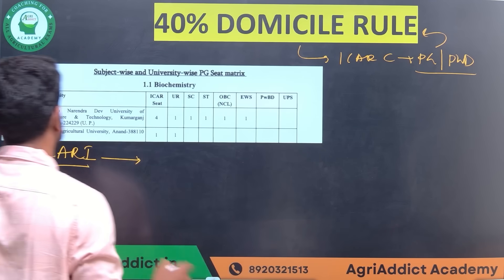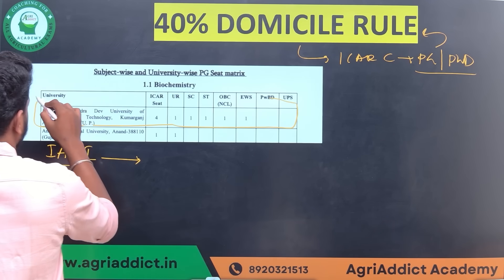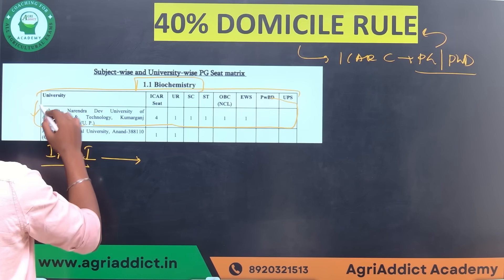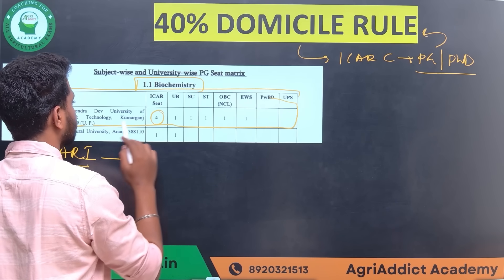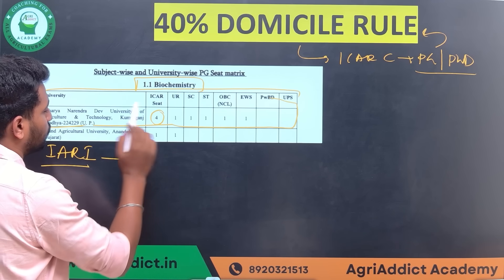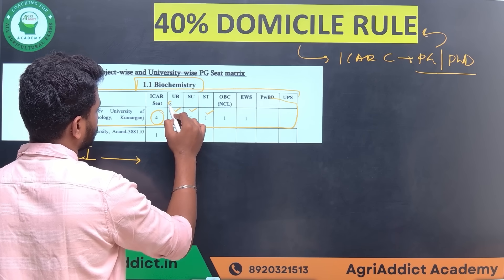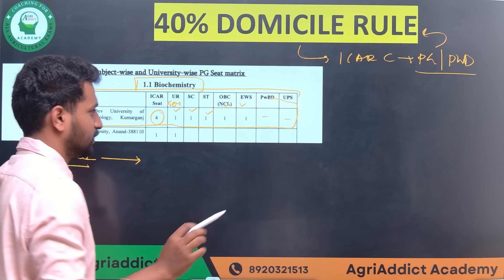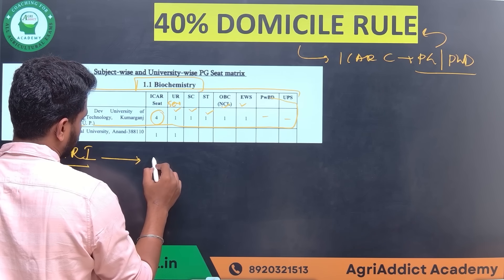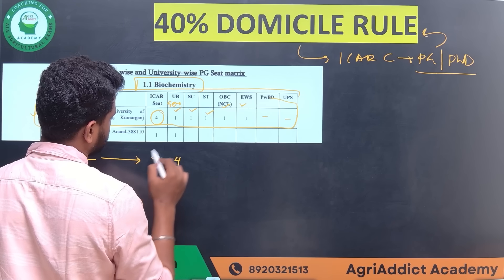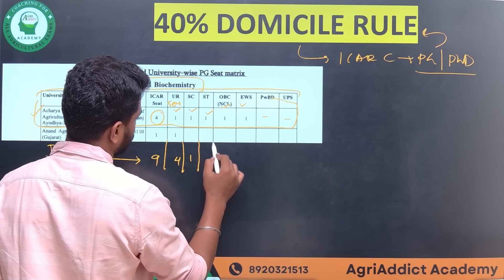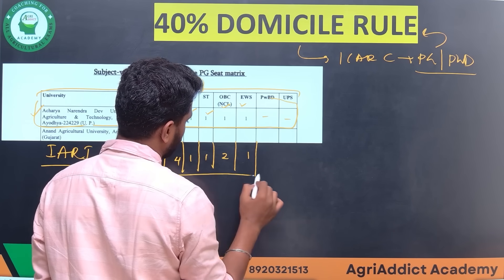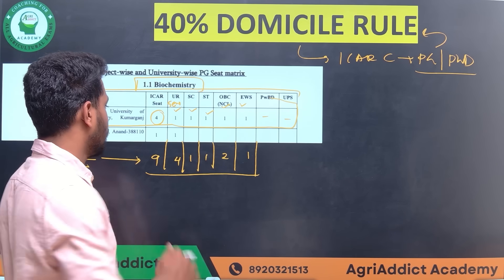Let me show you with a clear example using the ICAR counseling brochure. For each subject, the brochure mentions how many seats are available from a particular university. For example, at IARI, let's assume there are nine seats total, divided into categories: four from general, one from SC, one from ST, two from OBC-NCL, and one from EWS — summing up to nine seats.